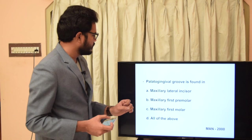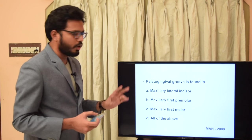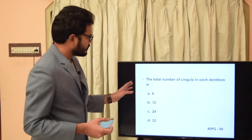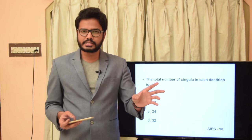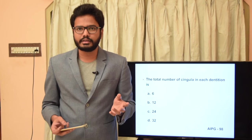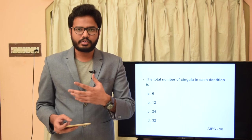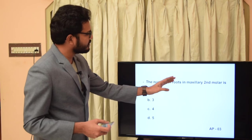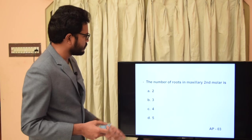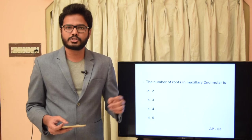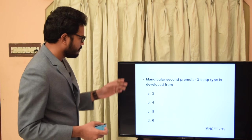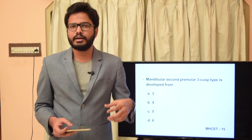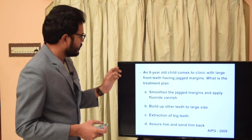The palatogingival groove is found in: maxillary lateral, maxillary first premolar, maxillary first molar, or all of the above? The palatogingival groove is a characteristic finding of the maxillary lateral incisor. The total number of cingula in each dentition is 12 — cingulum is present in anterior teeth, three per quadrant (central, lateral, canine), giving 12 total. The number of roots in the maxillary second molar is three: mesiobuccal, distobuccal, and palatal. The mandibular second premolar three-cusp type develops from five lobes, compared to two-cusp type which develops from four. Answer: 5.